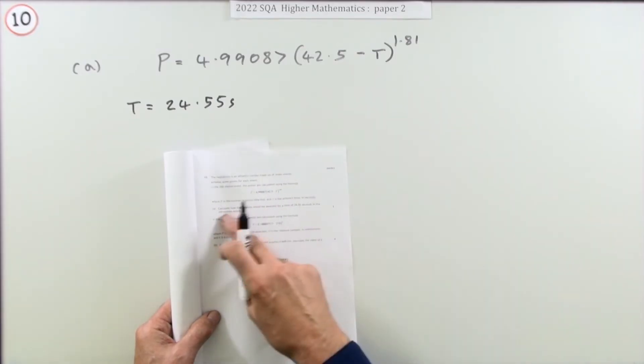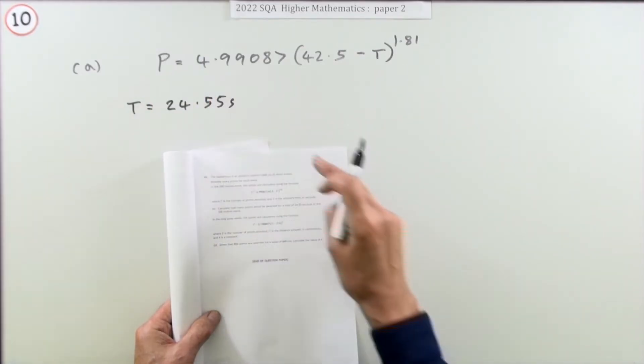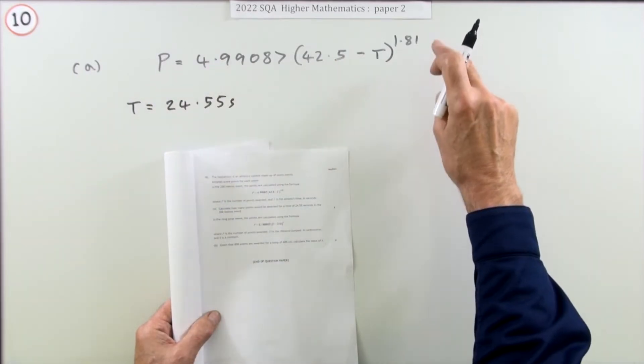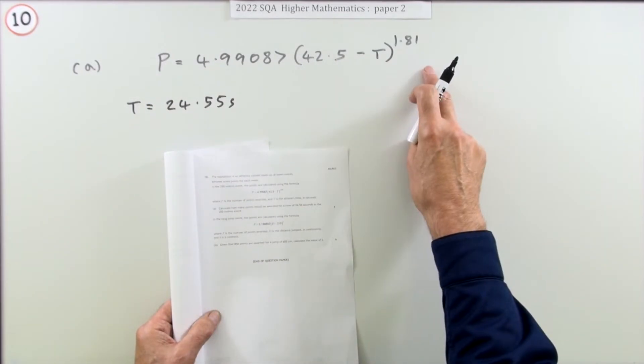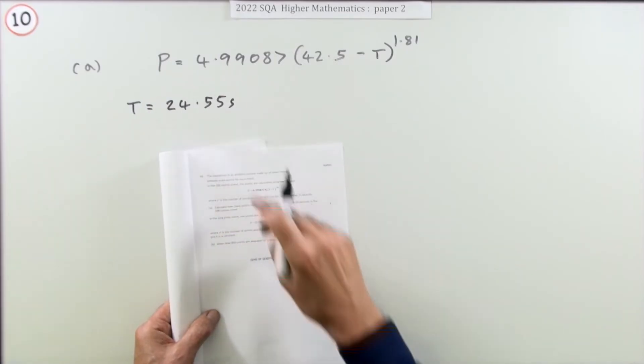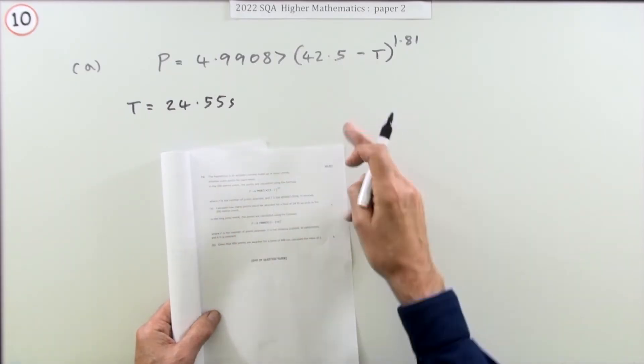It says P is the number of points in the 200 meters. P is given by this formula here. How many points would you get if T was 24.55? Well for the one mark, that's just a case of putting that number in there and pressing all the buttons.